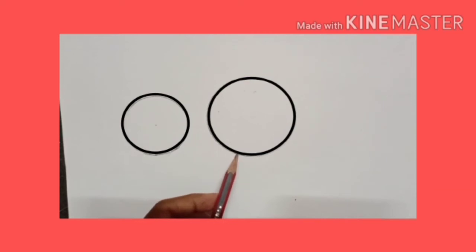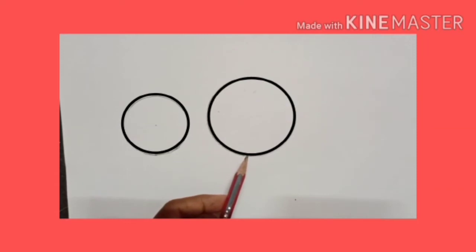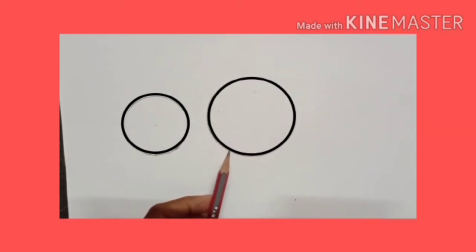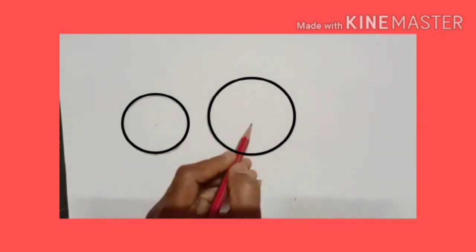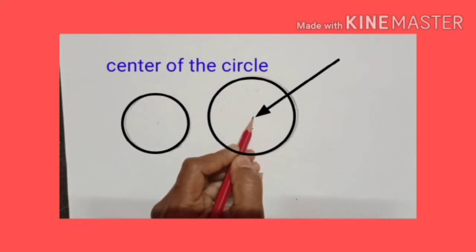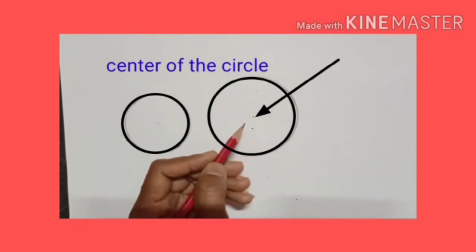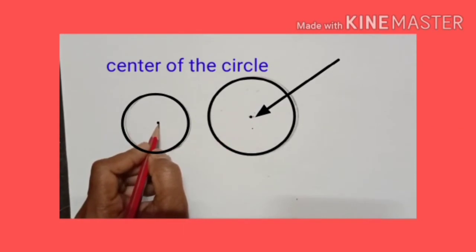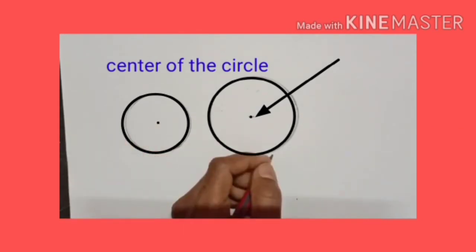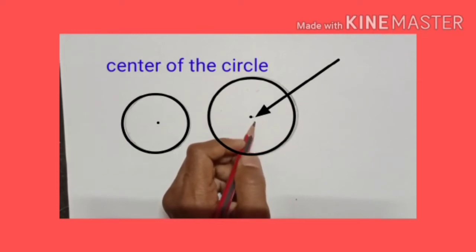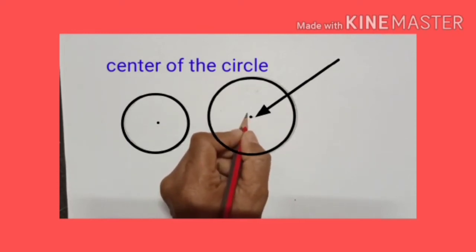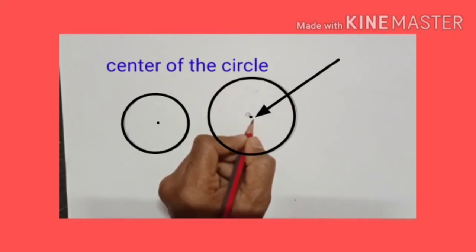What do you call the place where the metal needle of the compasses is placed? It is the center of the circle.